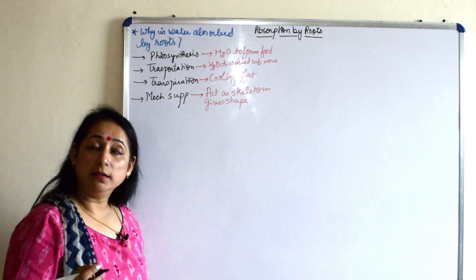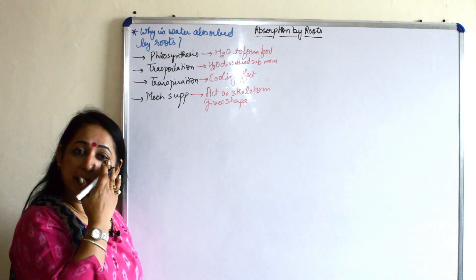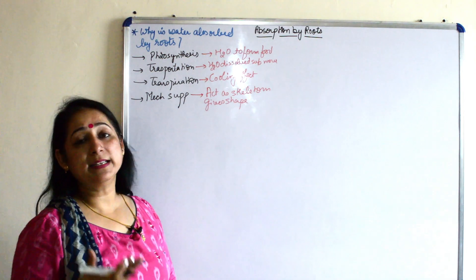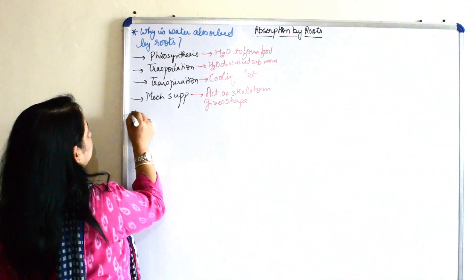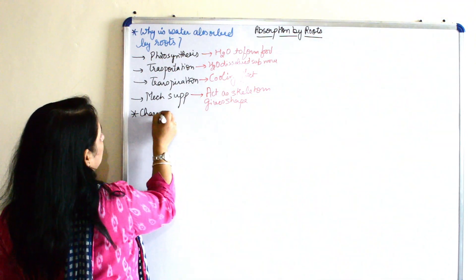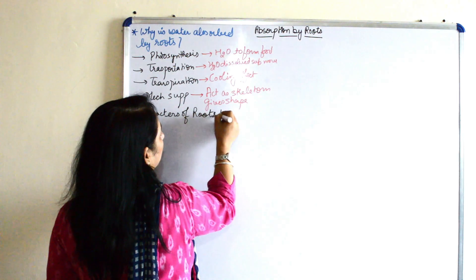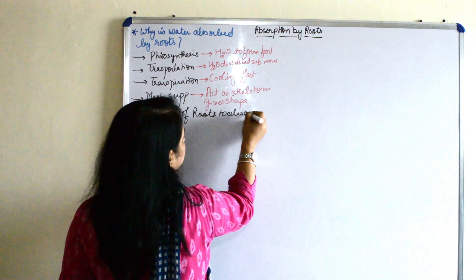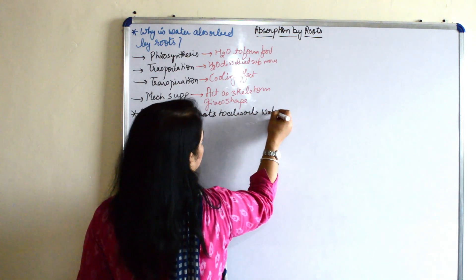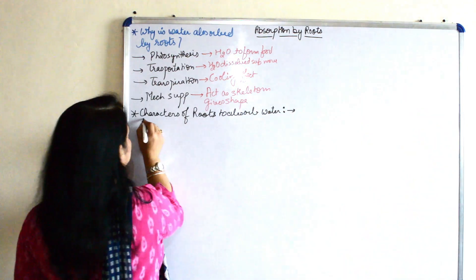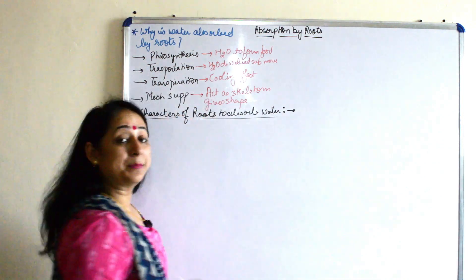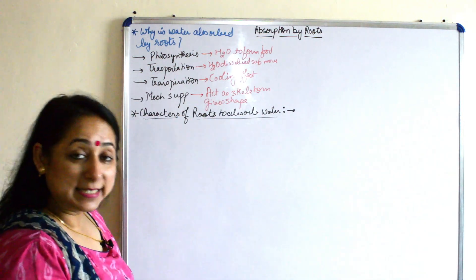The next topic underneath this would be what are the characteristics or features, characters of roots to absorb water. What are the characteristic features which enable the roots to absorb more water?